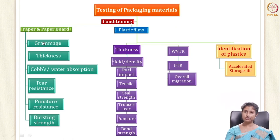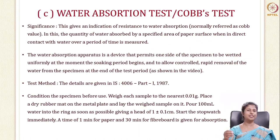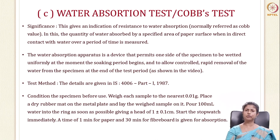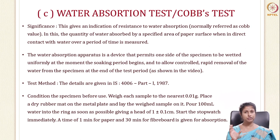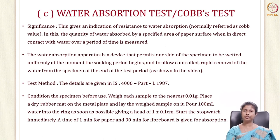The Cobb test — or water absorption test — is very important, especially during transit where packaging might encounter water sprays or puddles. It gives an indication of resistance to water absorption by the packaging material. The quantity of water absorbed by a specified area of the paper surface is measured. For cardboard boxes, which are thicker, a 30-minute Cobb test is used; for normal craft paper or thinner materials, a one-minute test is used.